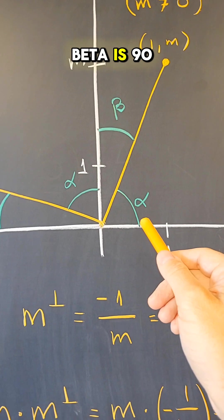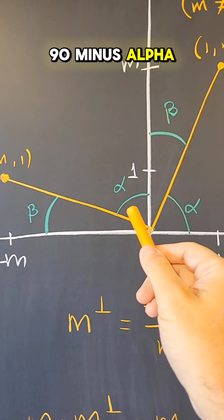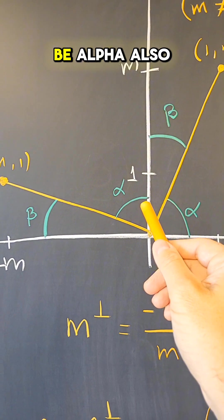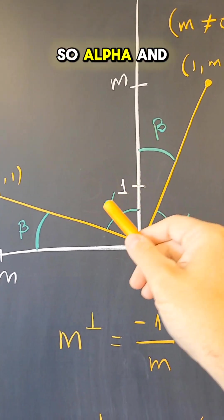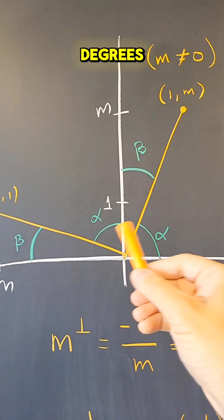But this angle beta is 90 minus alpha. So this is 90 minus alpha. So this angle here has to be alpha also. So alpha and beta add up to 90. So the angle from here to here is 90 degrees.